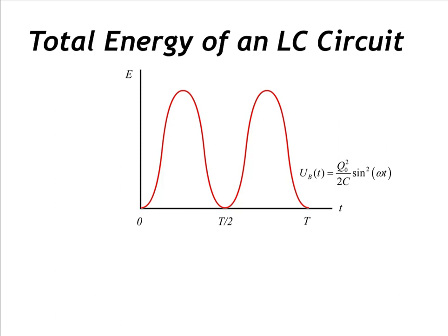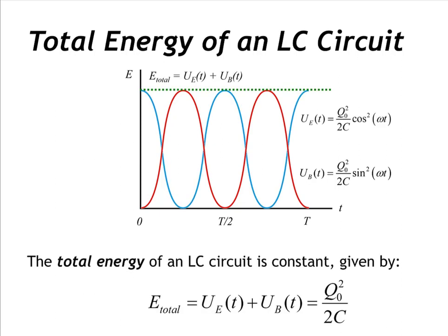If we were to add the potential energy of the magnetic field and the potential energy of the electric field, we would see that the total energy in our circuit is constant — given by the sum of the electric and magnetic potential energies. That constant is just the maximum value of potential energy that we started our circuit with, in accordance with conservation of energy.